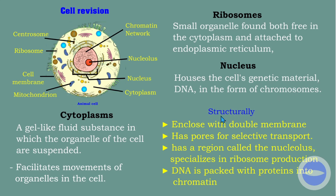Structurally, the nucleus is enclosed with a double membrane. The nucleus has pores for selective transport. The nucleus also has a region called the nucleolus, which specializes in ribosome production. DNA is packed with protein into chromatin inside the nucleus.